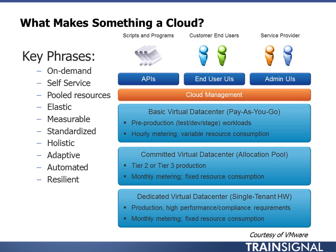VMware sees three ways of breaking up a data center for different offerings: basic, committed, and dedicated virtual data centers. They use terms like pay-as-you-go, allocation pools, and single tenants — basically offering resources at different allocation models. Pay-as-you-go means you pay only for what you spin up, while an allocation pool means you buy a dedicated amount of resources and may be charged whether or not you use them.